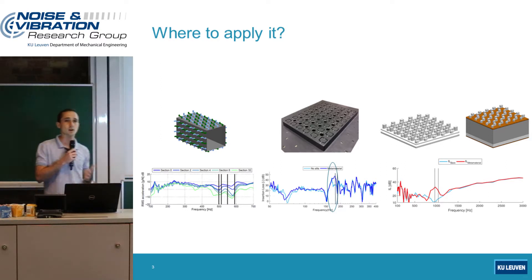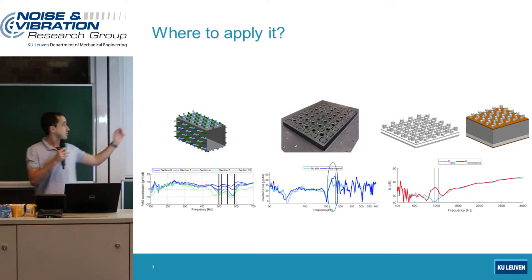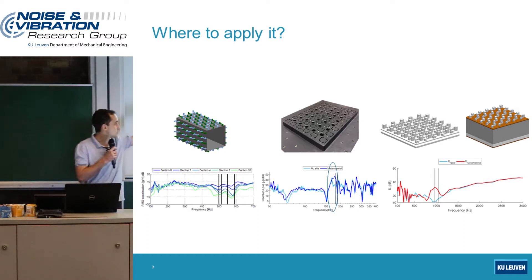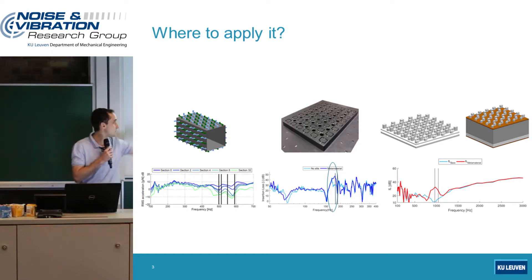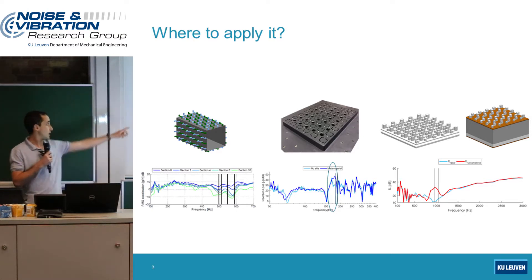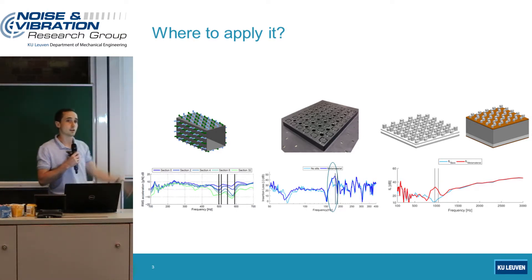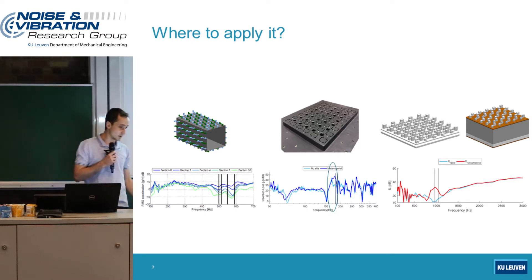On double panels, we have what we call the mass-spring-mass resonance. This creates a dip in STL, as you can see by the curve there. And using metamaterials, we attenuate it — as you can see by the red curve, it is largely attenuated.